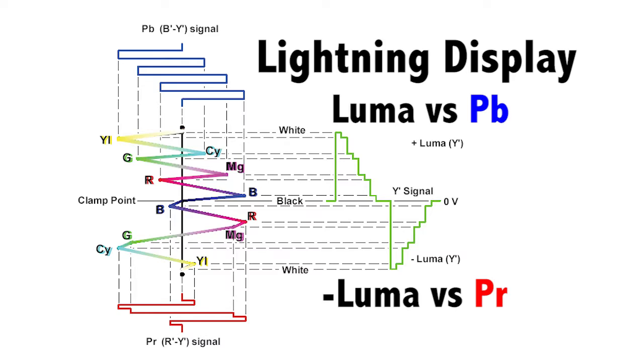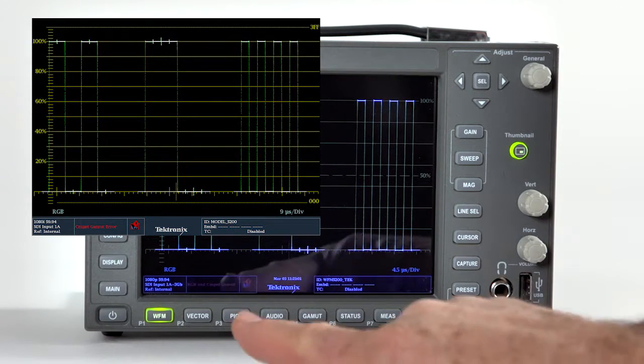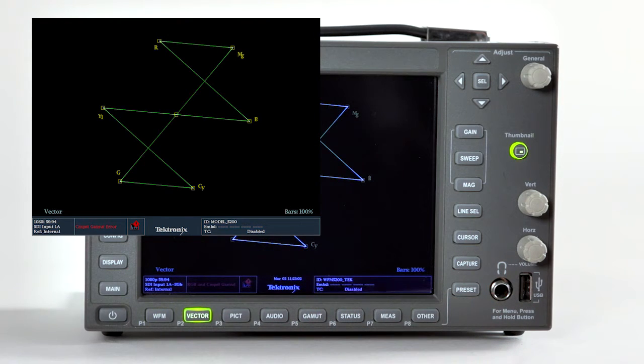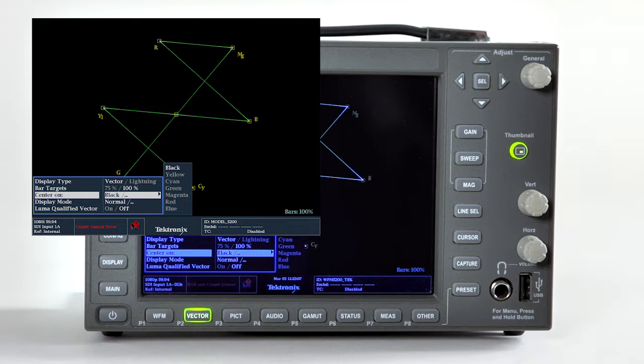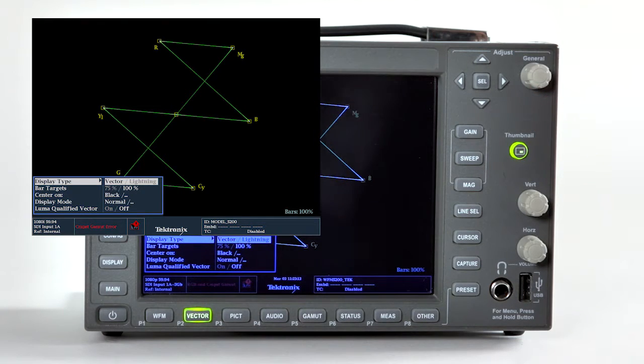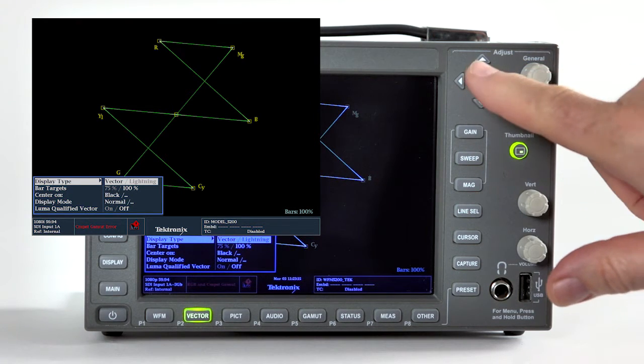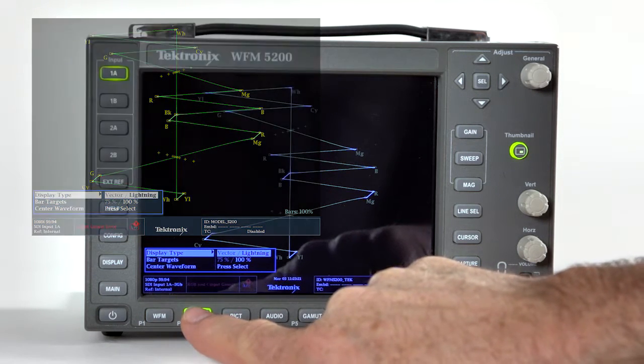In this way, it's easy to identify the component in error. To access the lightning display, select the vector button for a tile or full screen display. Push and hold the vector button brings up the menu. Select the display type using the arrow keys or general knob, and press select to toggle between vector and lightning displays. Press the vector button again to dismiss the menu.